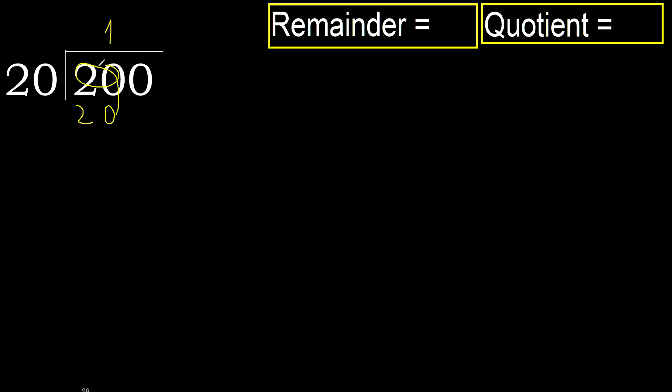20 is not greater, ok. Subtract: 20 minus 20 equals 0.